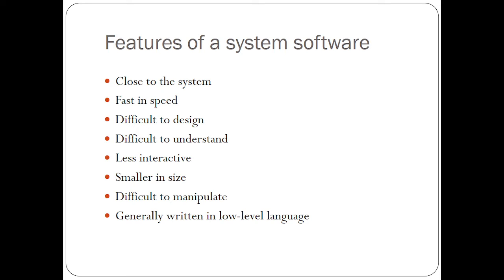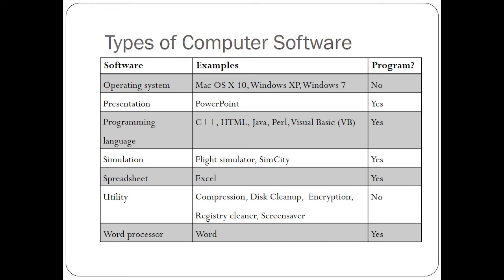Once you create a system software, it's less likely that you are going to add a lot of features. It's also difficult to manipulate. To be able to access the core of a system software and manipulate it is very difficult, though open source allows you to freely manipulate the operating system. They are generally written in low-level languages. These are the key features of a system software.